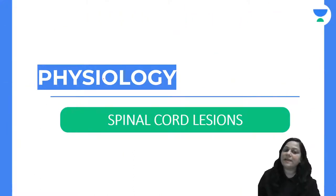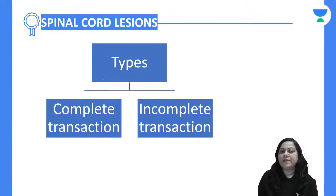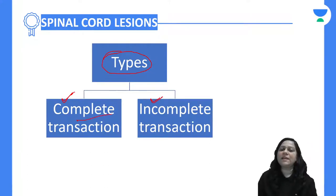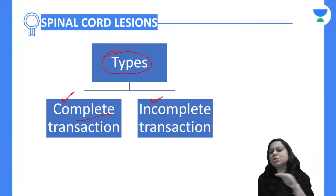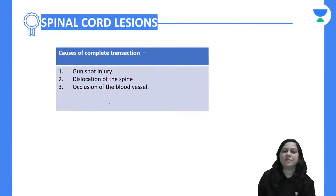Now let us come to today's topic: spinal cord lesion. What happens when there is a lesion in the spinal cord? Let us understand the types first. There are two types: complete transaction and incomplete transaction. Complete transaction means a through-and-through cut, while incomplete means only some tracts are damaged.